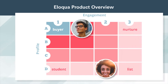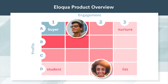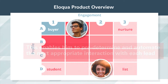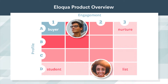The lead score components he can factor in are based on both profile and engagement data, including digital footprint. This enables him to predetermine and automate the next appropriate interaction with each lead. By using this advanced lead scoring, he can more accurately target the right company and the right contact at the right time.